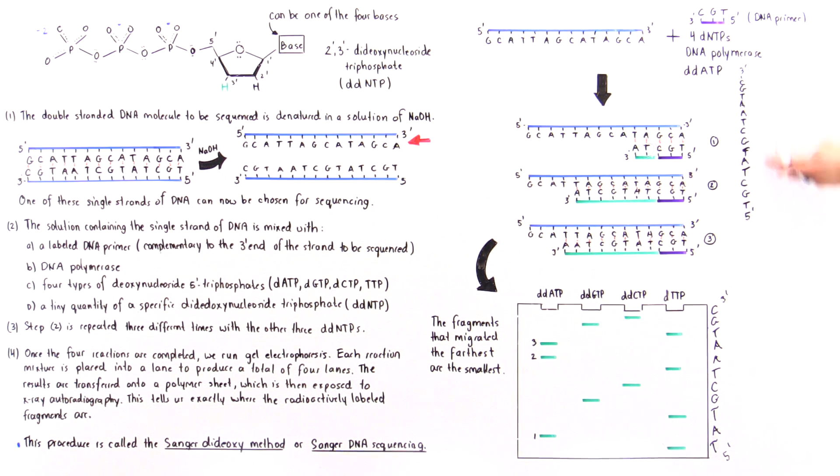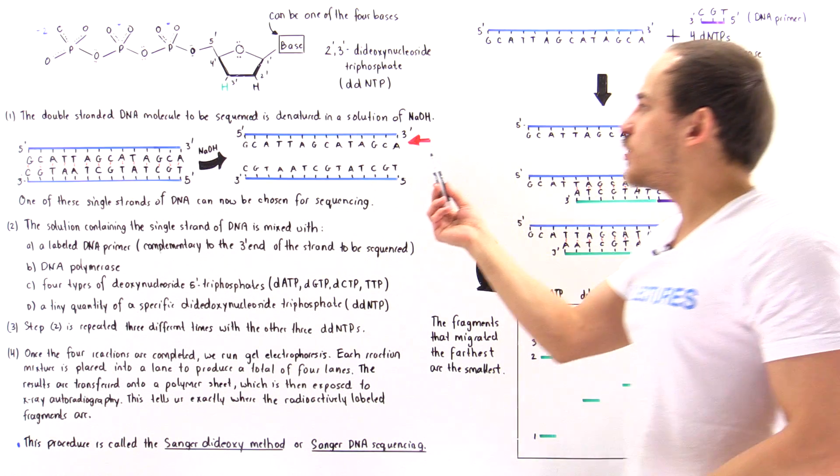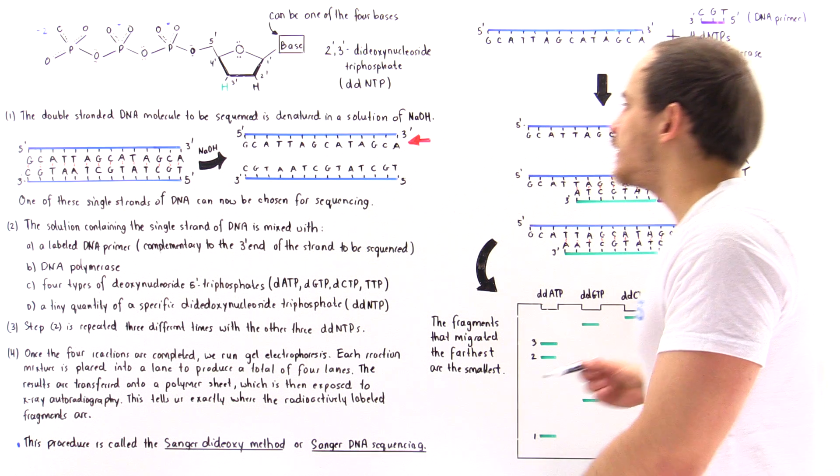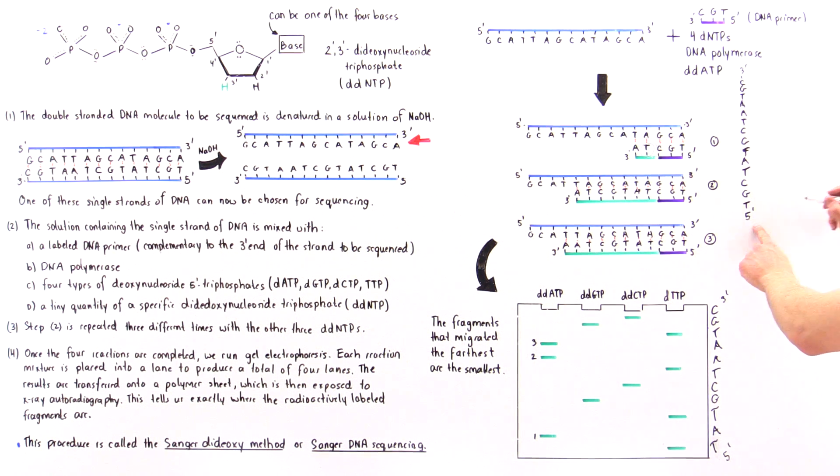And so now that we know what this sequence is, we can determine what the complementary sequence to this original DNA strand is simply by base pairing.